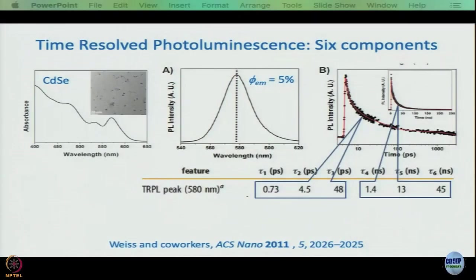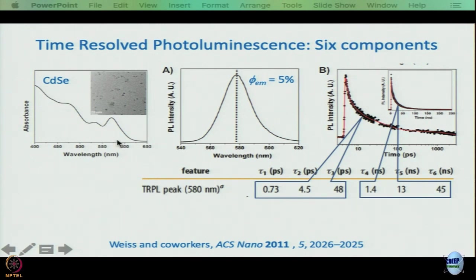As discussed in the previous module, they worked with 5 nanometer cadmium selenide particles, and also with slightly larger particles to verify whether their conclusions were applicable — and they were. This is the absorption spectrum we discussed earlier, and the photoluminescence obtained is more or less a mirror image of the band-edge absorption, with a quantum yield of only 5 percent.